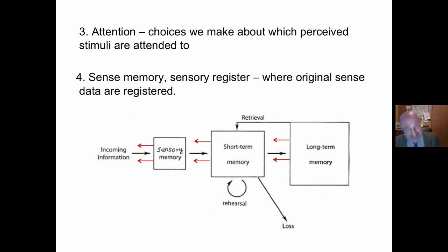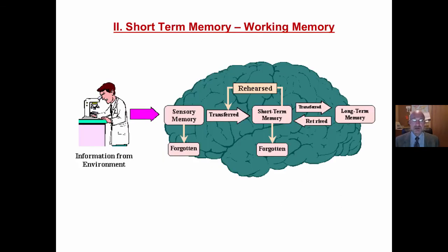And sense memory, sometimes called sense register. This is where the original sense data are registered. This has an unlimited capacity to perceive data. However, a very short duration to store this, one to three seconds at the most. And you can see the information processing model there.